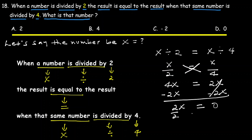Dividing both sides, x is equal to zero. So the number is zero. We can verify: zero divided by 2 is zero, and zero divided by 4 is also zero — same result. Therefore the number is 0.